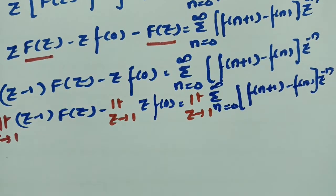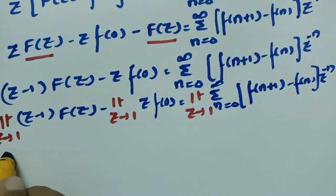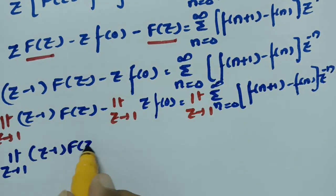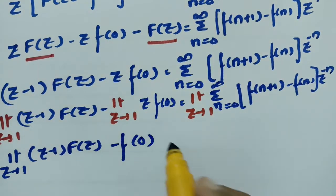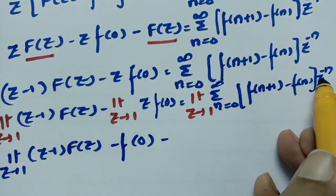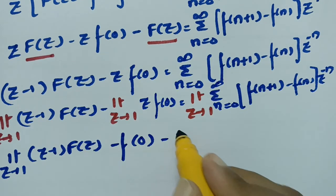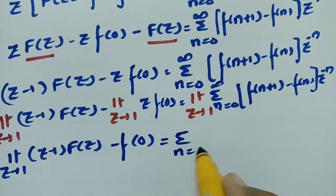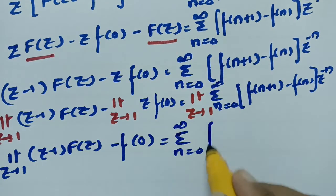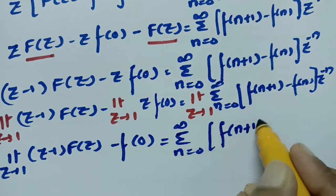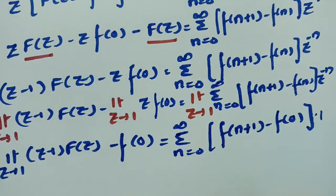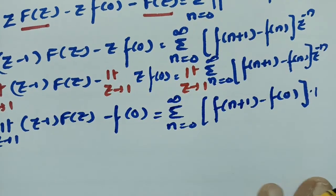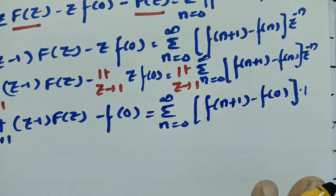I am leaving the left-hand limit as it is: limit z tends to 1 of (z minus 1) into capital F(z). Keeping z equals 1, this gives minus f(0) on the left. On the right, since z becomes 1, the summation simplifies to sigma from n equals 0 to infinity of [f(n+1) minus f(n)].